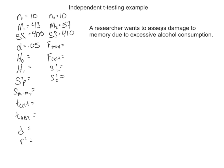Independent t-testing example. The researcher wants to assess damage to memory due to excessive alcohol consumption. We have a couple data points already provided. We know that we have 10 people in each one of the samples, so we have 10 people in a control group and 10 people in the experiment group. We also have the average scores on their memory test, the sum of scores, and the alpha level is set at 0.05.